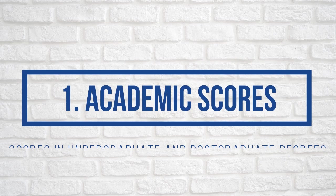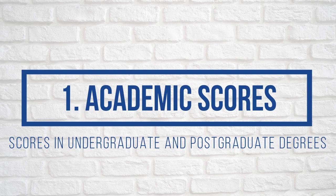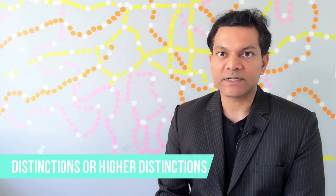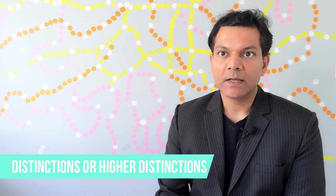So if you're ready, let's begin. The first thing that we assess when looking at a PhD scholarship applicant is how have they scored in their undergraduate and postgraduate degrees. Have you scored distinctions, higher distinctions, or just have a pass or a credit? These are some of the indications that give the panel an idea of your capability as a student.